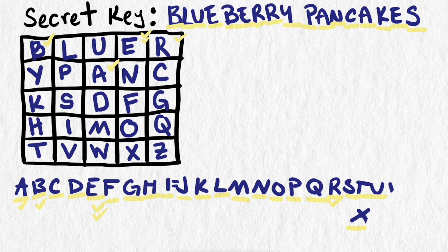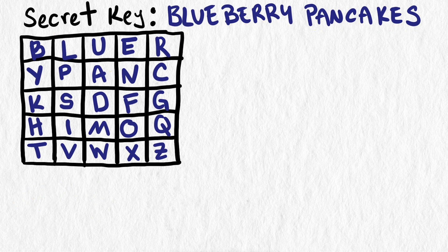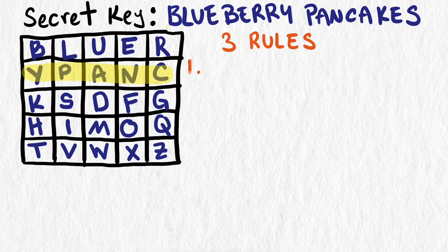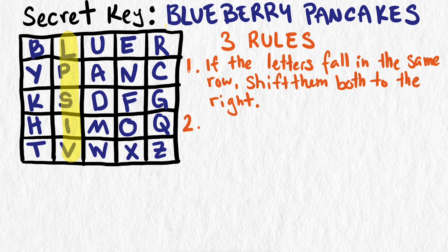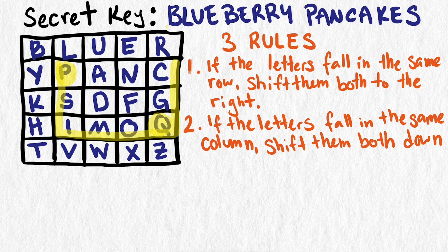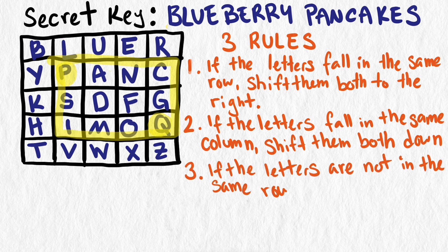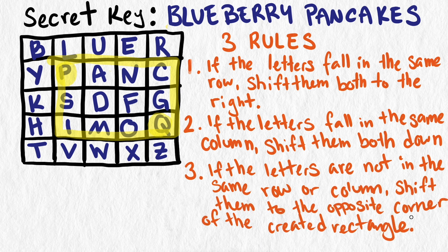Playfair's cipher works by encoding in pairs. Based on the location of the two letters in the table, one of three rules is applied. Rule one: if the letters fall in the same row, then shift them both one letter to the right. Rule two: if the letters fall in the same column, shift them both down. Rule three: if the letters are neither in the same row nor column, then consider the rectangle made with those letters as opposing corners and move each letter to the opposite corner within the same row.